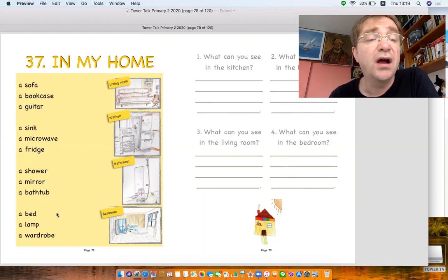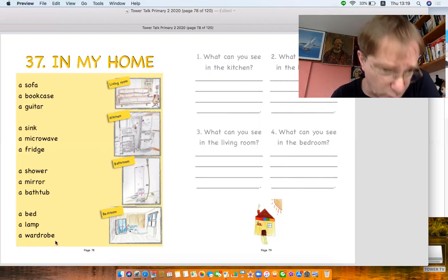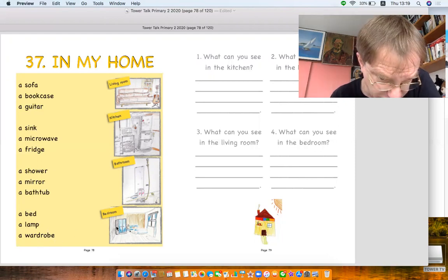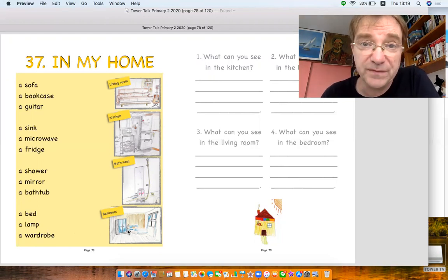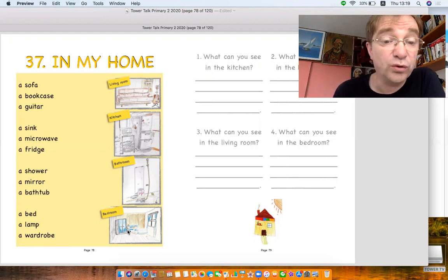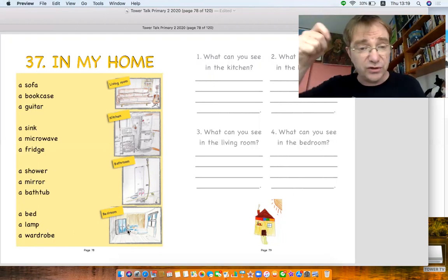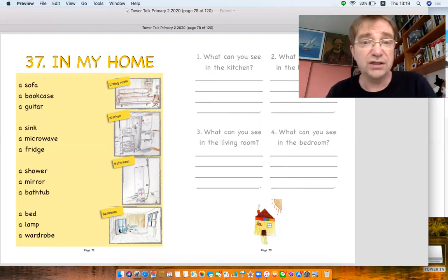Now here's our bedroom, we've got a bed, a lamp. A lamp is the little light by the bedside. And a wardrobe, wardrobe is this one. In America they say closet, closet in England, for wardrobe. Put your clothes, hanging clothes, dresses and suits and everything.